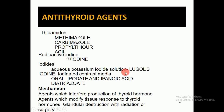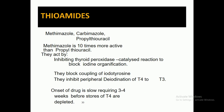Further agents include Lugol's iodine, iodinated contrast media such as oral ipodate and iopanoic acid, and diatrizoate. The simple mechanisms of action are: agents which interfere with the production of thyroid hormone, agents which modify the tissue response to thyroid hormone, and glandular destruction with radiation or surgery when chemotherapy is insufficient.